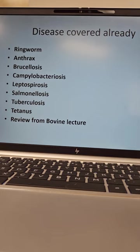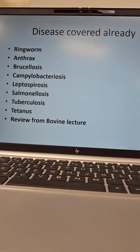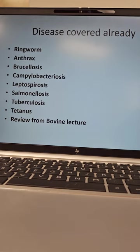Diseases we've covered already: ringworm — we talked about it in cows, know about it, it can also be present in sheep and goat. Same thing with anthrax, brucellosis, campylobacteriosis, leptospirosis. Remember, leptospirosis is zoonotic — they get it from the urine of other animals, it is contagious to all animals, there are different strains, we do vaccinate for it, and it attacks kidneys and livers causing permanent damage and death. Salmonellosis, tuberculosis, tetanus — remember the sawhorse stance with tetanus. Review these diseases from the bovine lecture.